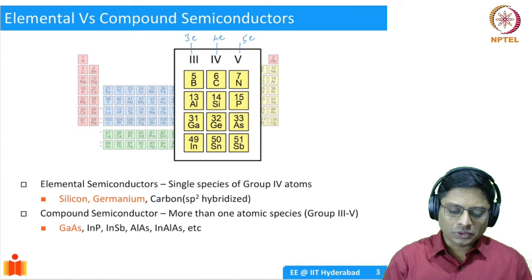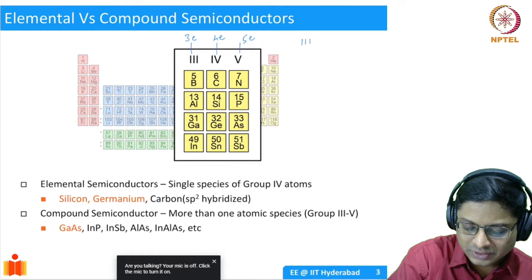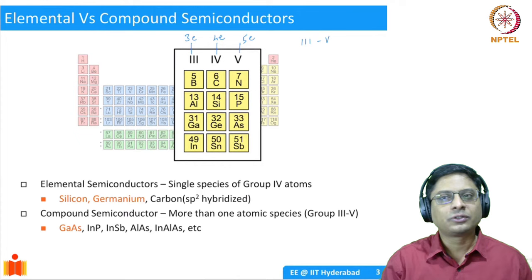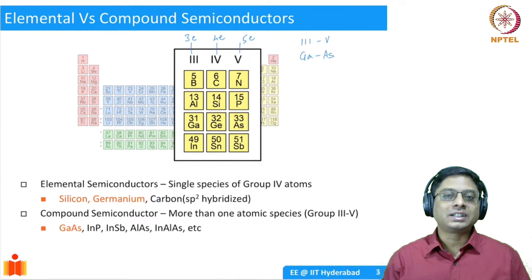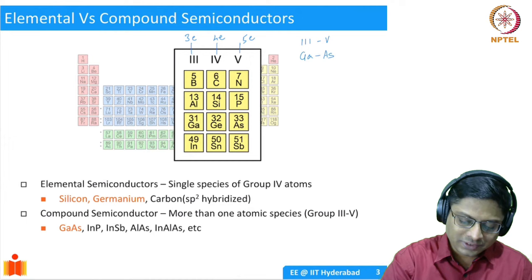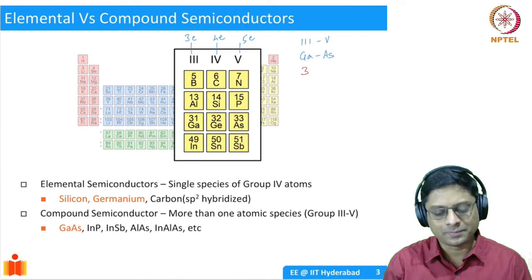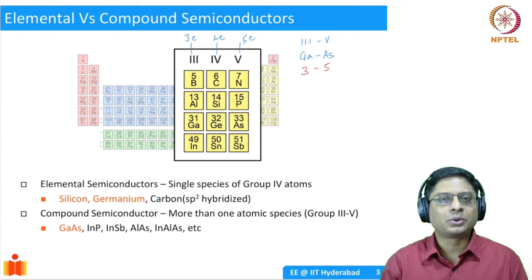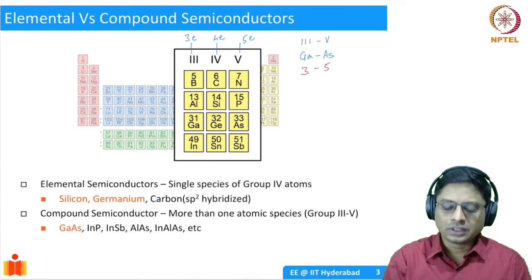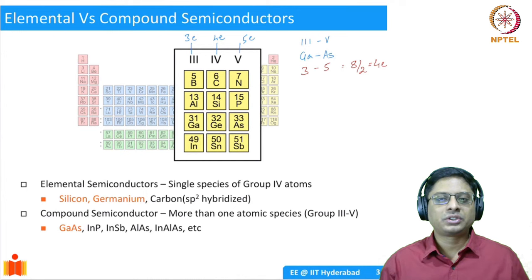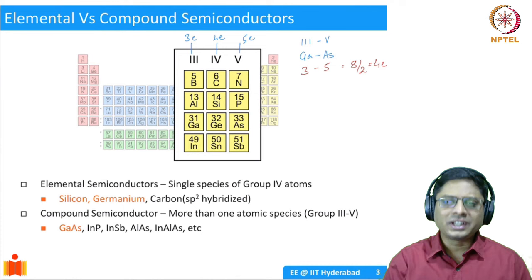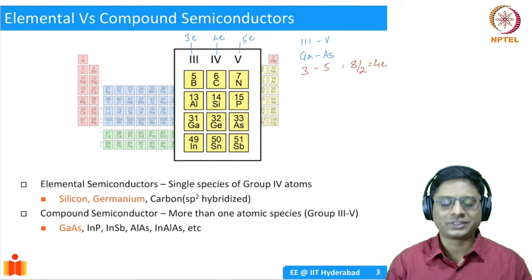In addition, you could also have what are called 3-5 semiconductors. You take one element from group 3 and another element from group 5 and form a compound. For example, take gallium from group 3 and arsenic from group 5 to form gallium arsenide — it turns out that these compounds also exhibit semiconductor behavior. The reason is that gallium has three electrons and arsenic has five electrons in the outermost shell, so the average number of electrons per atomic species is (3+5)/2 = 4 electrons. So even compound semiconductors effectively have four electrons in the outermost shell, which explains their semiconductor behavior.